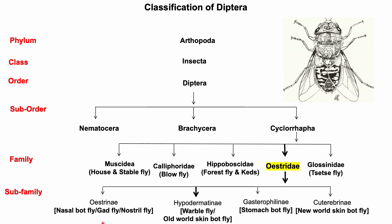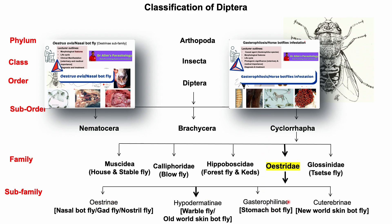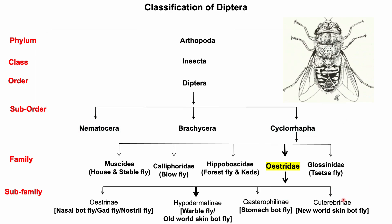There are four important subfamilies under the family Oestridae: Oestrini, Hypodermatini, Gastrophilini, and Cuterebrini. In this lecture, I will discuss Hypoderma, or warble fly, or Old World skin botfly.